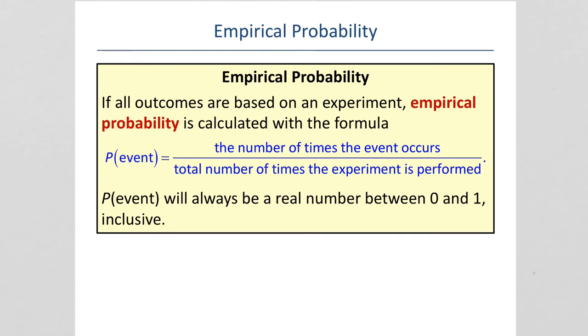Empirical probability is the number of times an event actually occurs over the number of times the experiment is performed. So, with empirical probability, most of the time, you're looking at an experiment that has been performed.